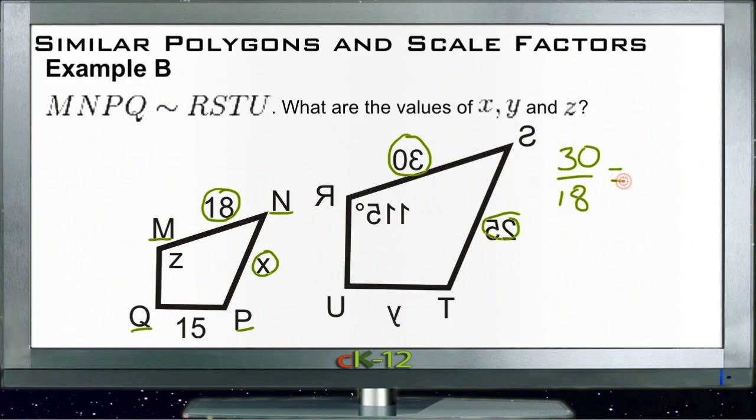So now we have our corresponding sides together. That means we can multiply 18 times 25 and 30 times x, and we get 30x is equal to 450 plus 270. Then we divide both sides by 30, so we get x equals 9. So that means that this side over here is 9.